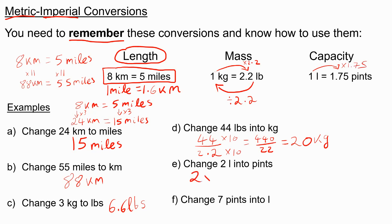So if I did 175 times 2, that would give me 350. So 2 times 1.75 is just 3.5. So we can say 2 liters is 3.5 pints.